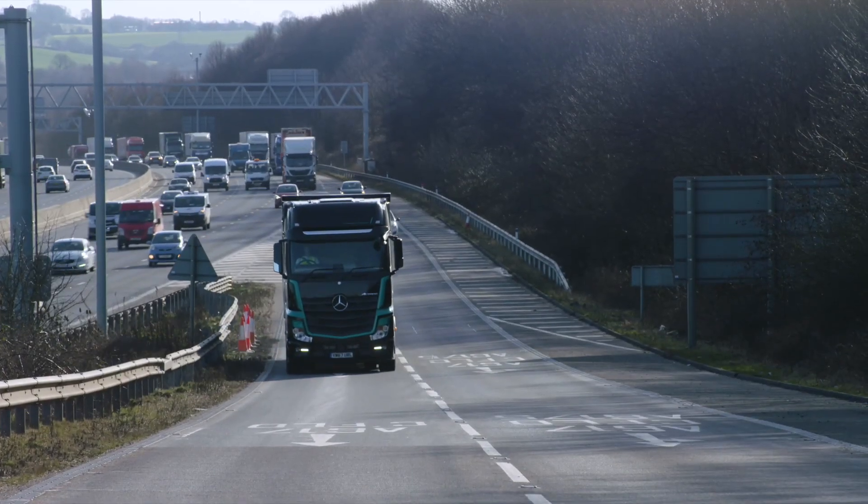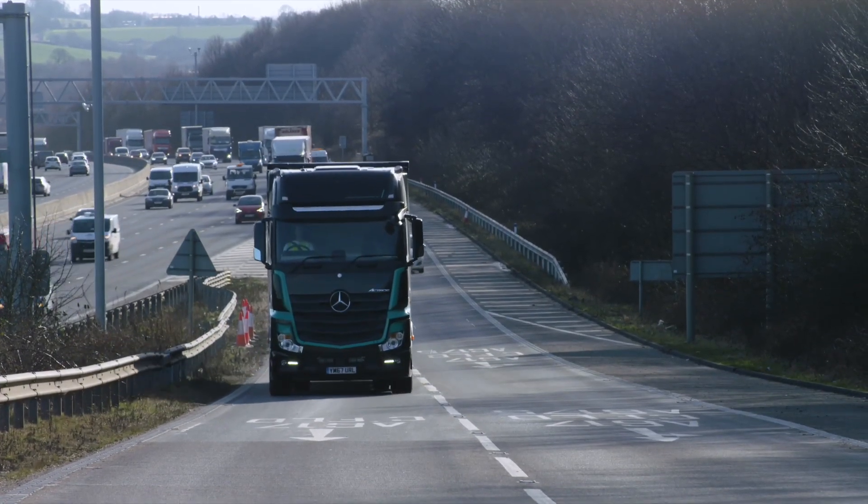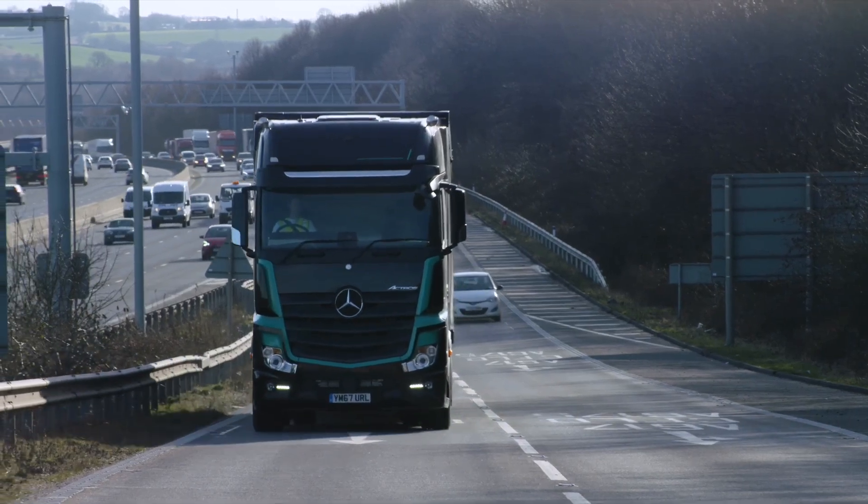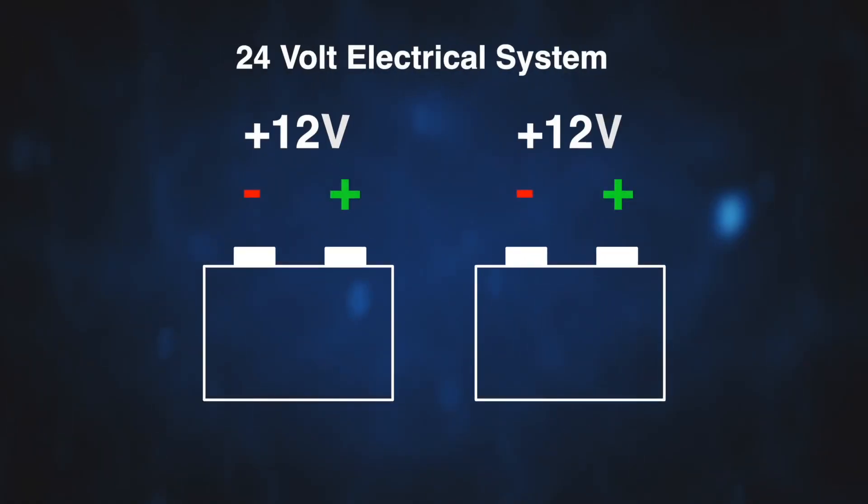Most heavy vehicles use 24-volt electrical systems because of the very high power needed to start large engines. A 24-volt system is made up of two 12-volt batteries connected in series and is known as a pack. The voltages of each battery are added together, whilst the ampere capacity of the pack remains the same as that of a single battery.